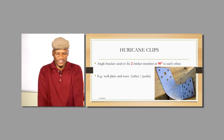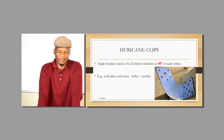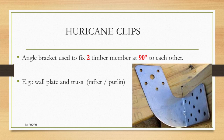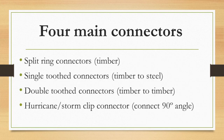To summarize, the four main connectors are: the split ring connector, the single tooth connector, the double tooth connector, and the hurricane clip. You now know exactly where each needs to be used.